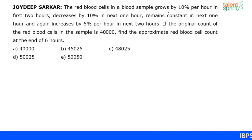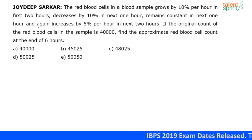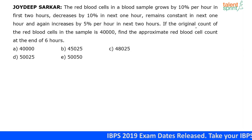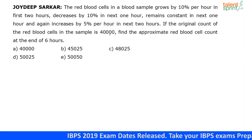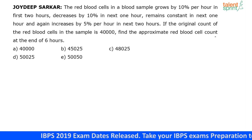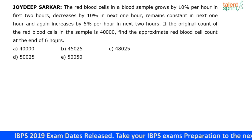The red blood cells in a blood sample grow by 10% per hour in the first two hours, decrease by 10% in the next one hour, remain constant in the next one hour, and again increase by 5% per hour in the next two hours. If the original count of the red blood cells in the sample is 40,000, find the approximate red blood cell count at the end of six hours.